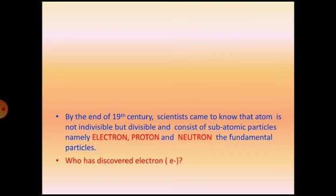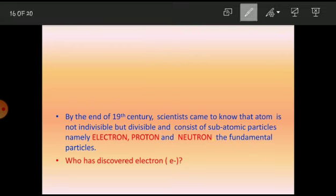By the end of the 19th century, we came to know that the atom is divisible and consists of subatomic particles. Those particles are electron, proton, and neutron. These are the three fundamental subatomic particles of the atom.